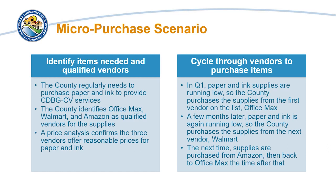In this scenario, the county regularly needs to purchase paper and ink to provide CDBG-CD services. The county identifies OfficeMax, Walmart, and Amazon as qualified vendors for the supplies. A price analysis confirms the three vendors offer reasonable prices for paper and ink. In quarter one, paper and ink supplies are running low, so the county purchases from the first vendor on the list, OfficeMax. A few months later, paper and ink are running low again, so the county purchases from the next vendor, Walmart. The next time, supplies are purchased from Amazon, and then back to OfficeMax the time after that.